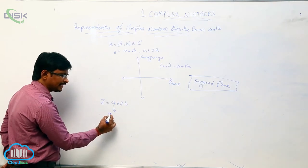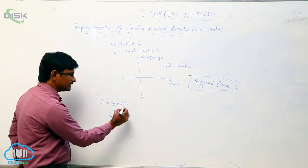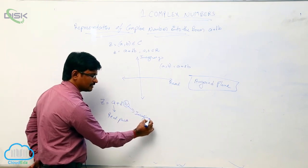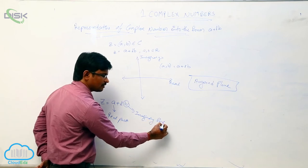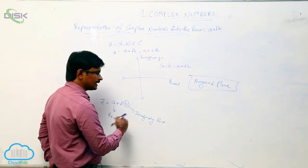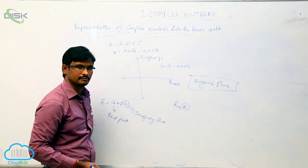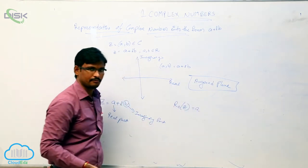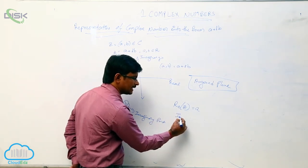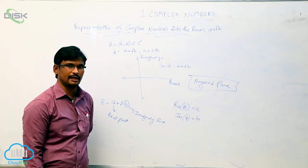In the complex number z equal to a plus ib, the value a is called the real part of the complex number and b is called the imaginary part of the complex number. The real part of the complex number is denoted by Re(z), where Re(z) equals a, and the imaginary part is denoted by Im(z), where Im(z) equals b.